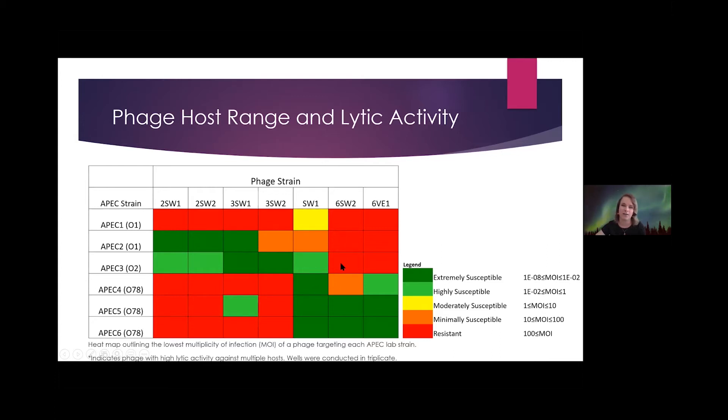The three rightmost phages SW1 through 6VE1 show the greatest promise given that they have high activity against all the O78 strains tested, which is the most commonly observed in Canada. So we plan to use these three phages for a cocktail strategy for treating APEC in our in vivo model.